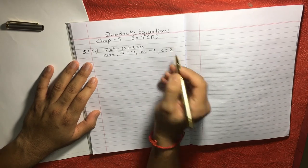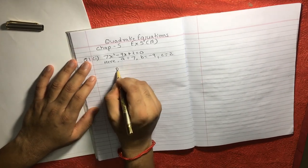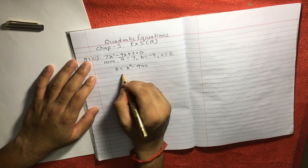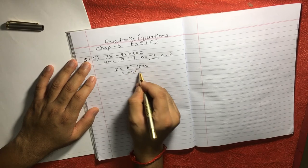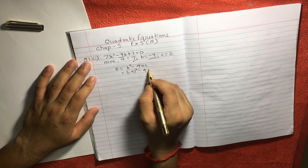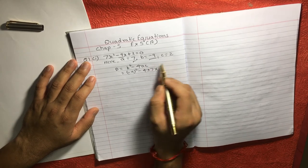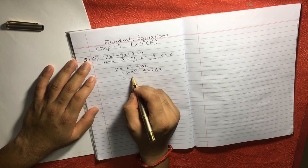Remember, we have a formula D is equal to what? B square minus 4AC. B is what? Minus 9. Minus 9 whole square minus 4. A is what? 7 into C. C is what? 2. If you solve this, 9 square is 81 minus minus plus, this will become 81. And if you solve this 4 times 7 times 2, this is 56.